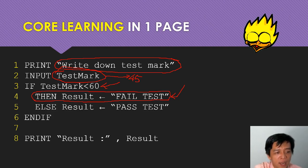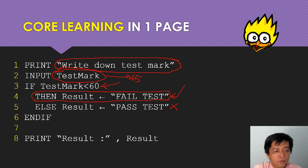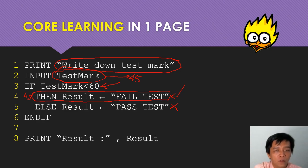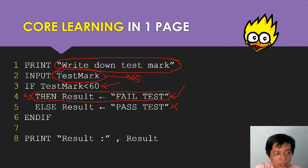After this one is fulfilled, it will ignore line 5. Since 45 is the test mark, the result is fail test. After this one is done, it will ignore the other. If the first one is not fulfilled, then it will go to line 5 - ELSE.